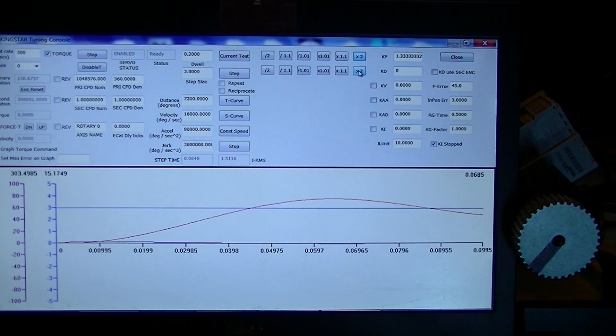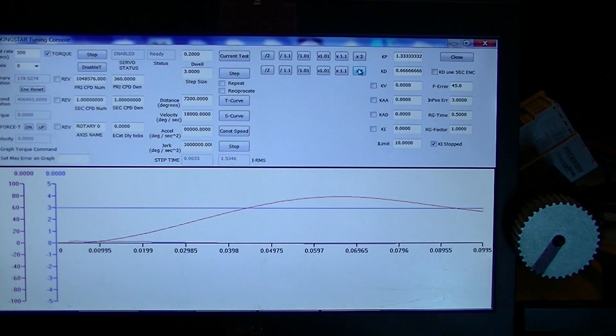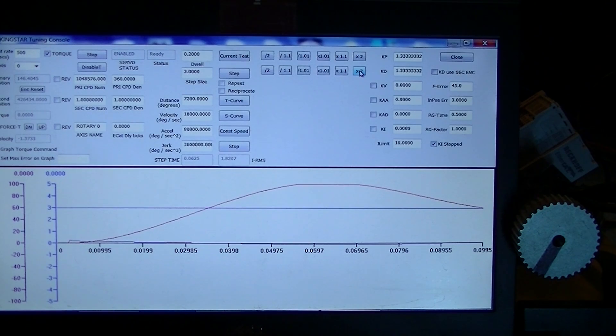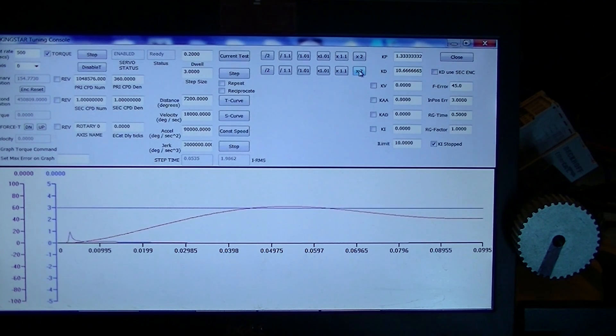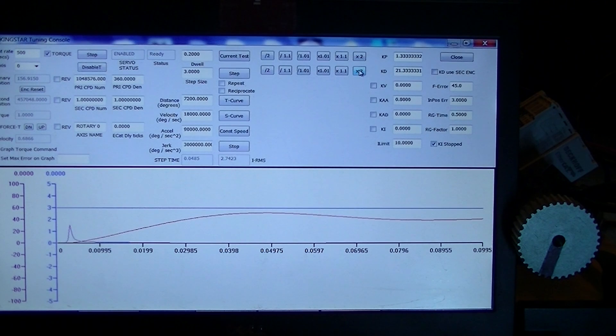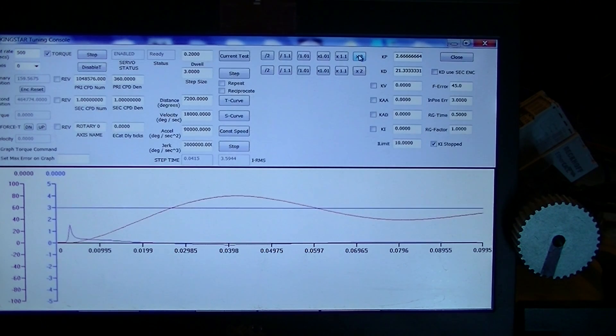So right now, I'm going to start to increase with the times 2. I'm going to increase the KD, which is going to prove the system is more stable. I'm just going to continue doubling this until that output is starting to reduce. Once it gets below the line, I'm going to go back and do KP. This is just an iterative process, but the key is you know exactly what to do.